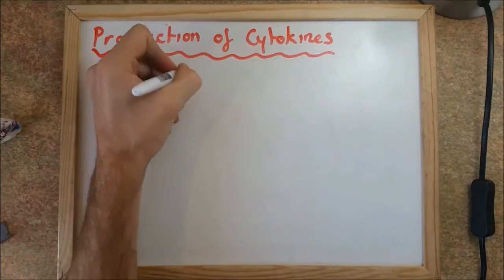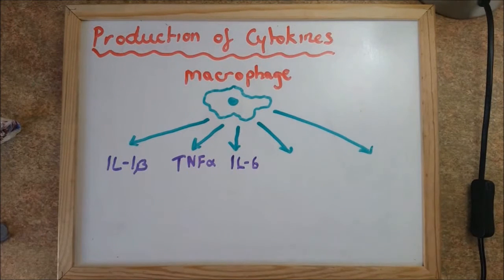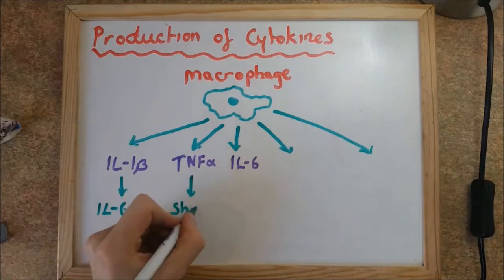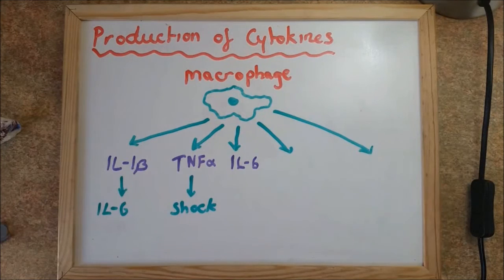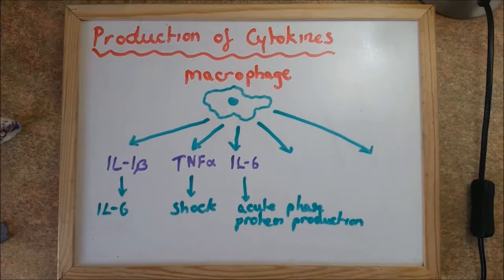Macrophages produce various types of cytokines: IL-1-beta, TNF-alpha, and IL-6. IL-1-beta is associated with the production of IL-6. TNF-alpha is associated with induction of shock. IL-6 is associated with acute phase protein production. Each of these cytokines cause systemic effects such as fever.